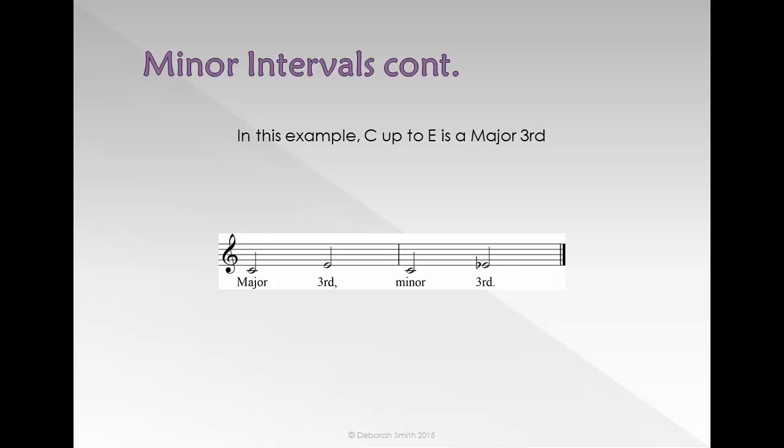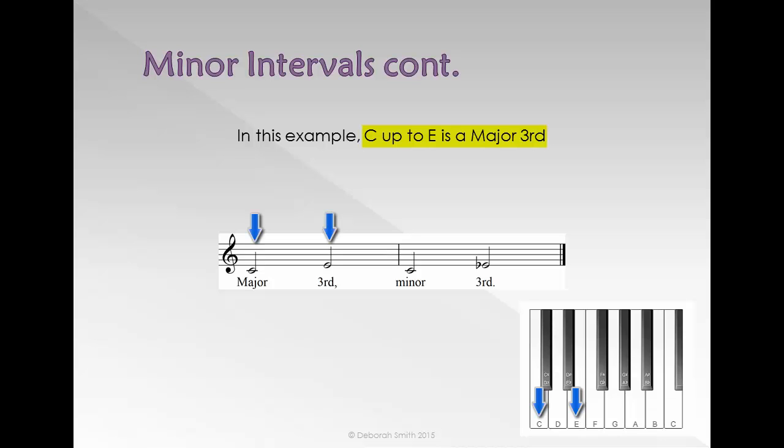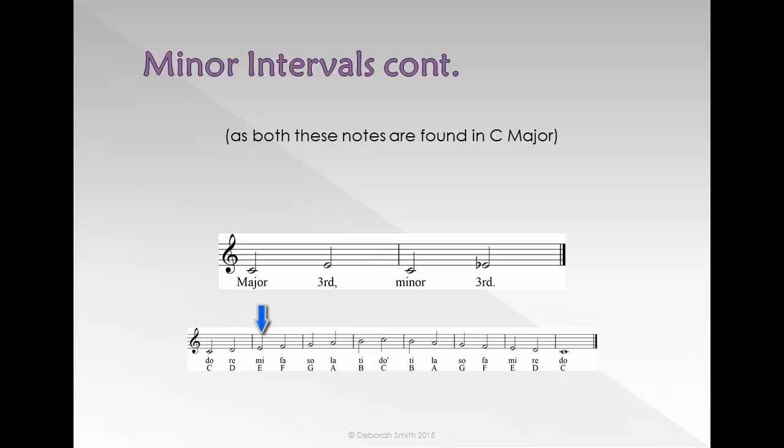In this example, C up to E is a major third because E is the third note in the C major scale. Both notes are found in C major.